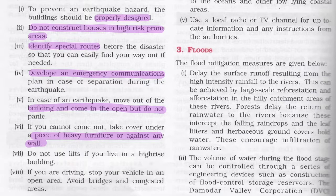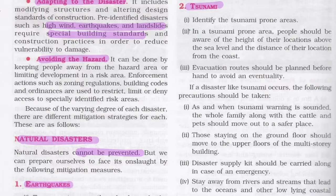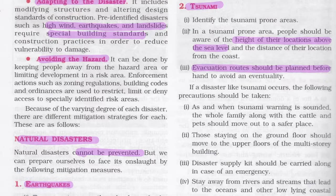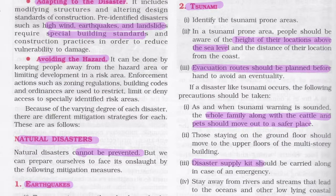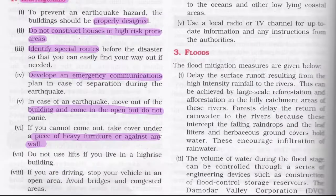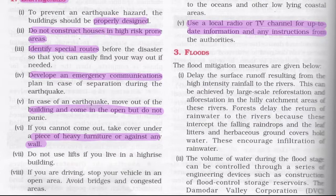For tsunami mitigation, identify tsunami-prone areas; people should be aware of their location's height above sea level and distance from the coast. Evacuation routes should be planned in advance. When a tsunami warning is sounded, the whole family along with cattle and pets should move to a safer place. Those on ground floors should move to upper floors of multi-story buildings. A disaster supply kit should be carried. Stay away from rivers and streams that lead to oceans. Use local radio or TV for up-to-date information.